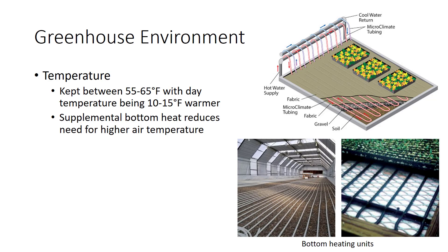Environmental controls for heating and cooling can be very simple, such as using a basic thermostat, or they can be as complex as using a computer. In general, the night temperatures in the greenhouse should be kept between 55 and 65 degrees Fahrenheit, with the day temperature being 10 to 15 degrees Fahrenheit warmer.